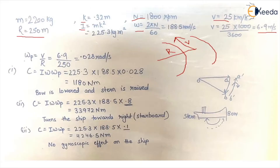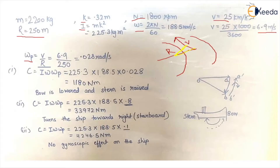The angular velocity of precession is v/R. When the rotor has an initial axis of spin and the body moves to a new position, the axis of spin changes, and the angular velocity of precession becomes v/R. For Case 1 — the ship turns right at a radius of 250 m — we calculate the gyroscopic couple using the formula C = I·ω·ωₚ. Substituting the values gives the answer.